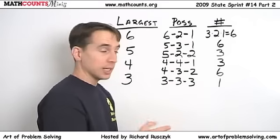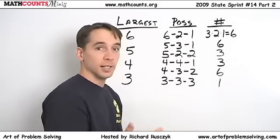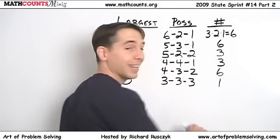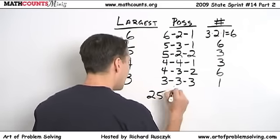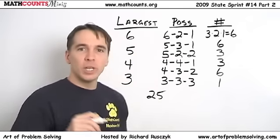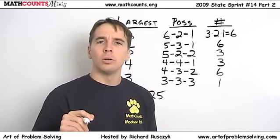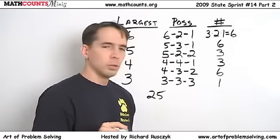So we can just add them all up. 1 plus 6 plus 3, that's 10. Plus 3 plus 6, that's 19. Plus 6 more, that's 25. So we add them all up. We write down our 25. Write that down in our test. And we are wrong.